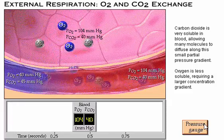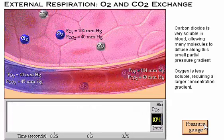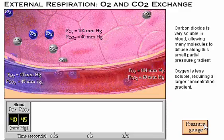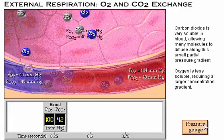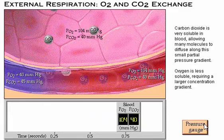Oxygen, which is less soluble, requires a much larger concentration gradient to provide adequate oxygen to the body.